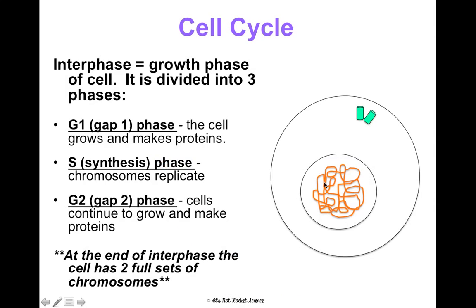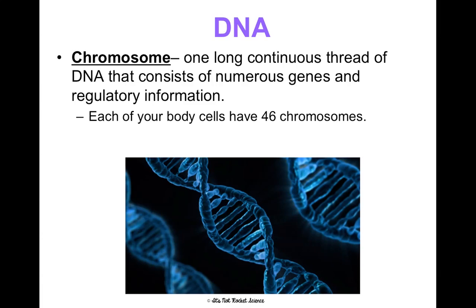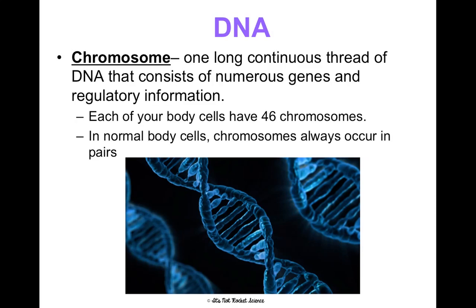Let's talk about this DNA for a minute because it kind of looks like spaghetti. Chromosomes are one long continuous thread of DNA that have numerous genes and regulatory information on them. Your body cells have 46 chromosomes in them as a human — that number is specific to humans, but you yourself have 46 chromosomes in all of your body cells. Those chromosomes tend to occur in pairs, so there are really 23 pairs — 23 chromosomes from your mom and 23 similar chromosomes from your dad to give you 46 total.